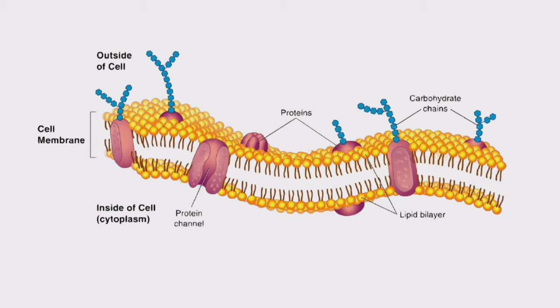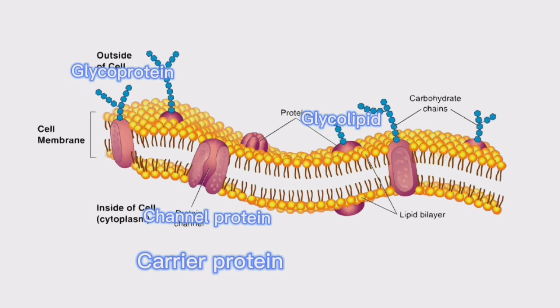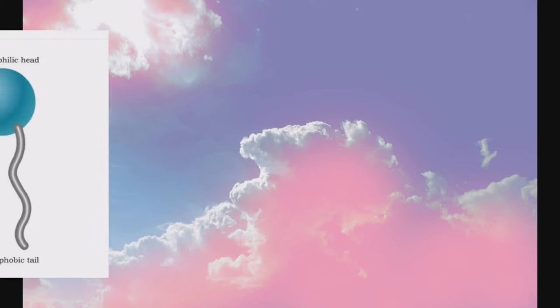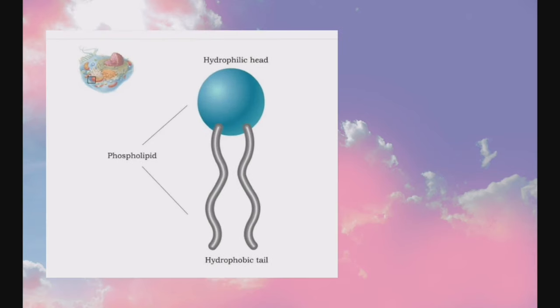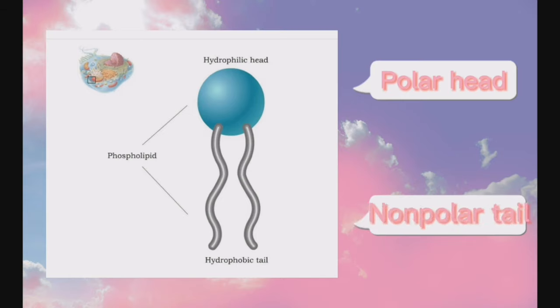The plasma membrane's bilayer is made up of phospholipid molecules consisting of a polar head (hydrophilic — attracted to water) and a non-polar tail (hydrophobic — repels water). There are three types of membrane permeability: permeable (allows substances to pass freely), impermeable (substances cannot move across), and selectively permeable (only allows certain substances to pass).